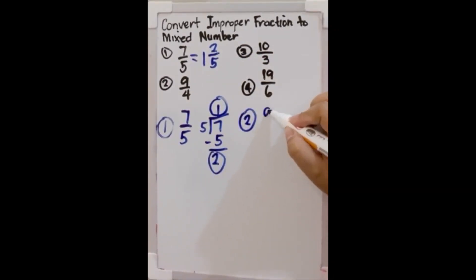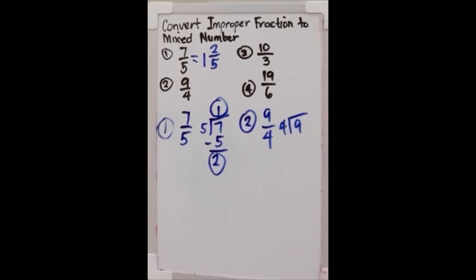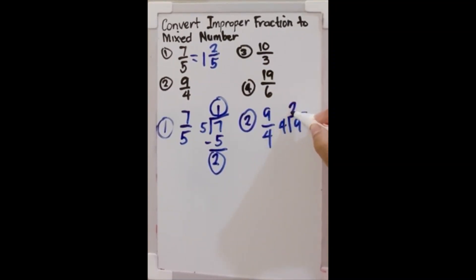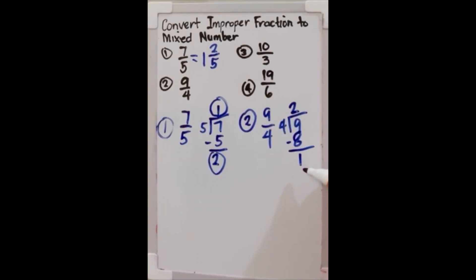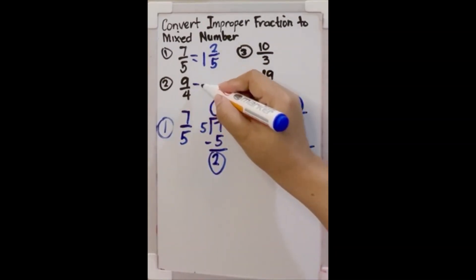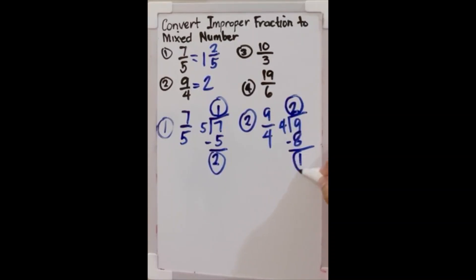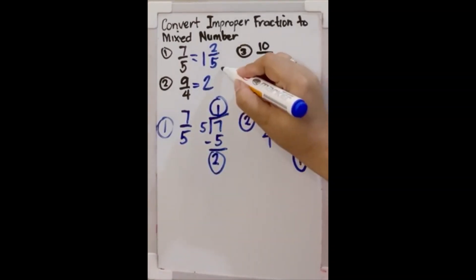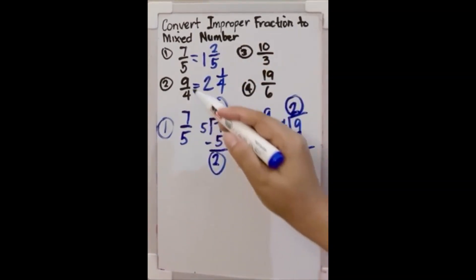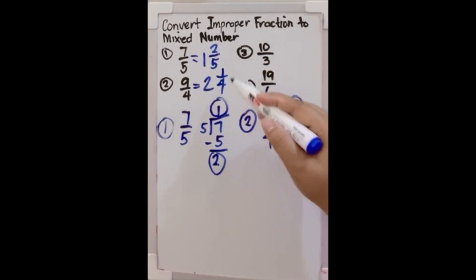Number 2, we have 9 over 4. So this is 9 divided by 4, which is 2. 2 times 4 is 8. Now we subtract: 9 minus 8 is 1. Writing the mixed number, we start with the quotient 2, then the remainder 1 over the denominator 4. So 9 over 4 is equal to 2 and 1 over 4.